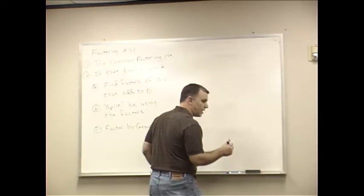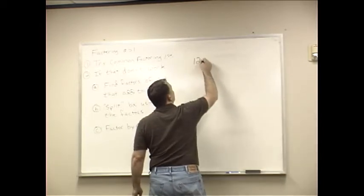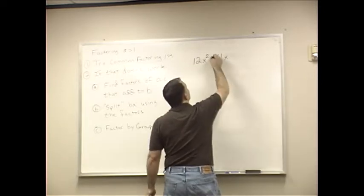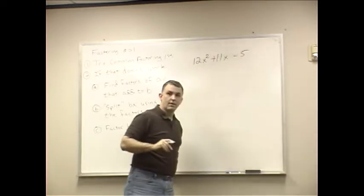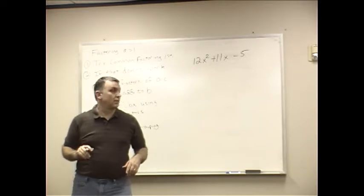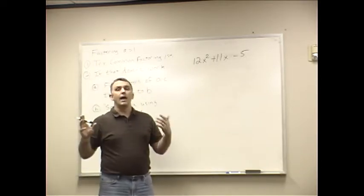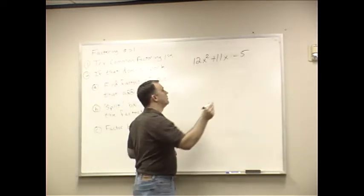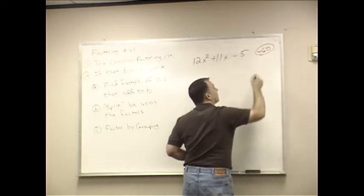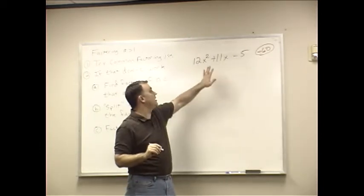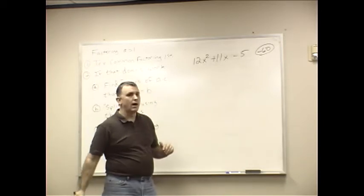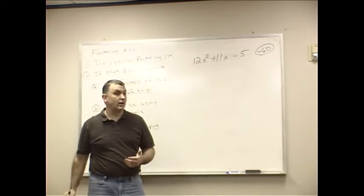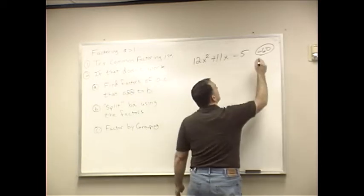12X squared plus 11X minus 5. Obviously, I've got your notes over there I'm looking at. A times C, that adds to B. Well, 12 times negative 5, that's negative 60. So, I'm looking for factors of negative 60 that add to 11. You know, some of the other ones, you can look at them and you can see them right away. If you can't see it, just start listing factors. That's okay.